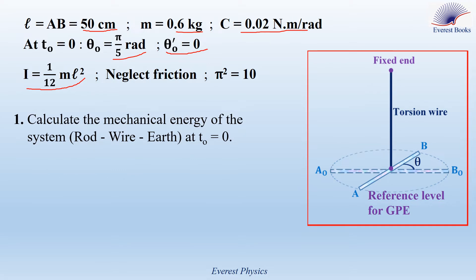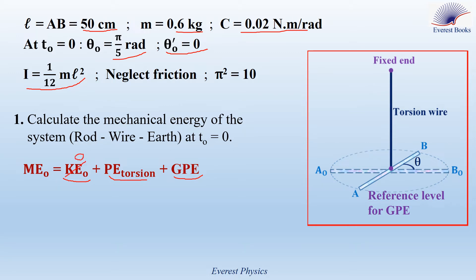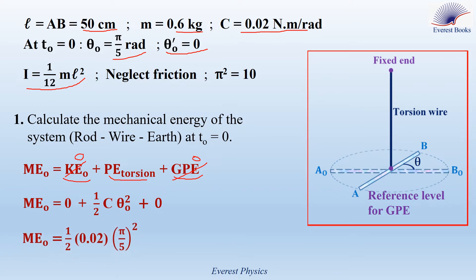Question 1: Calculate the mechanical energy of the system at T0 equal 0. The mechanical energy equals kinetic energy plus torsion potential energy plus gravitational potential energy. Since the rod is released from rest, KE at 0 equals 0. Since the center of mass remains on the reference level, GPE is always 0. Therefore, the mechanical energy at T0 equals one half C theta₀ squared. Substituting C equal 0.02 and theta₀ equal pi over 5, the mechanical energy equals 4 times 10 to the power minus 3 joules.